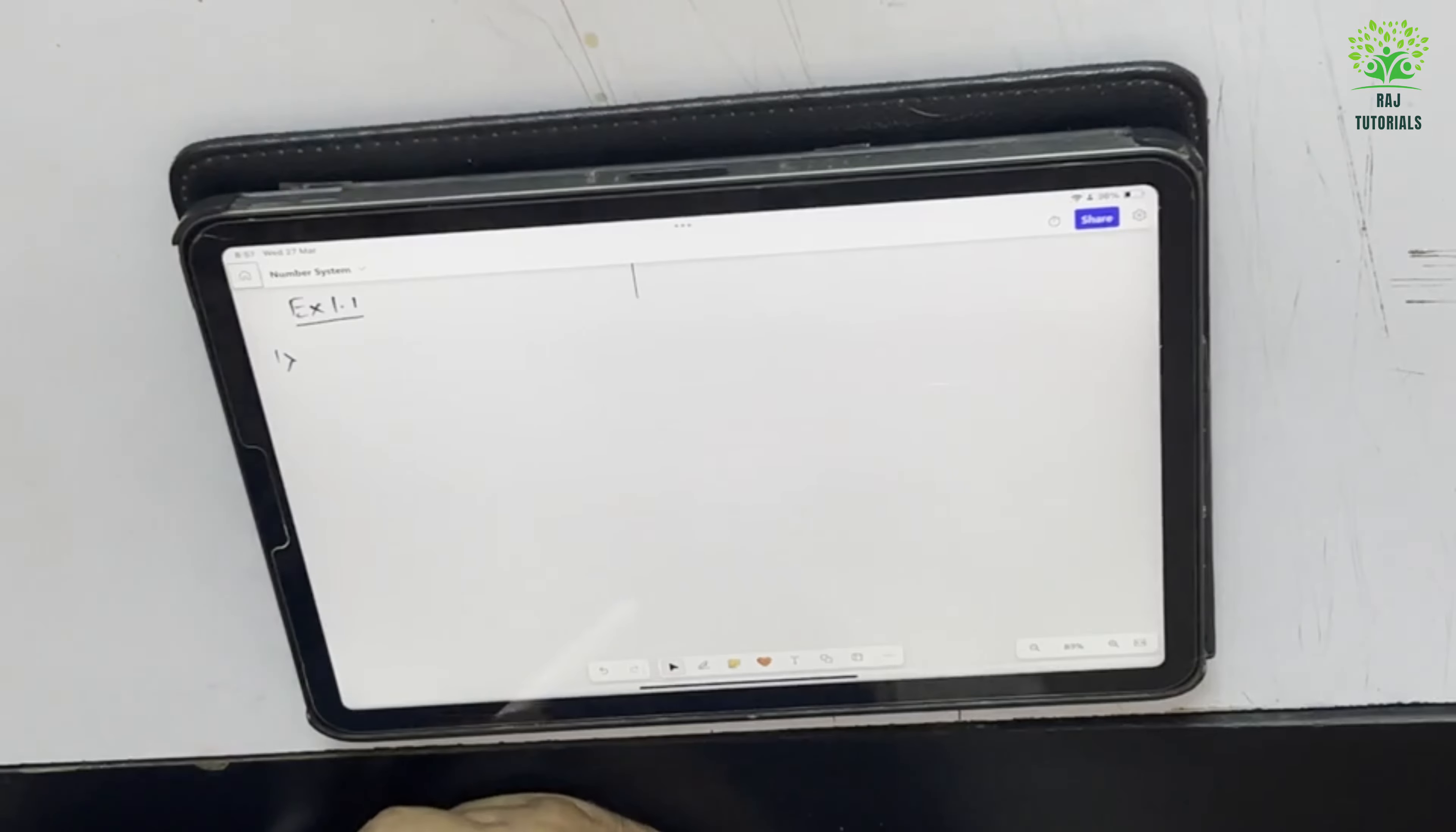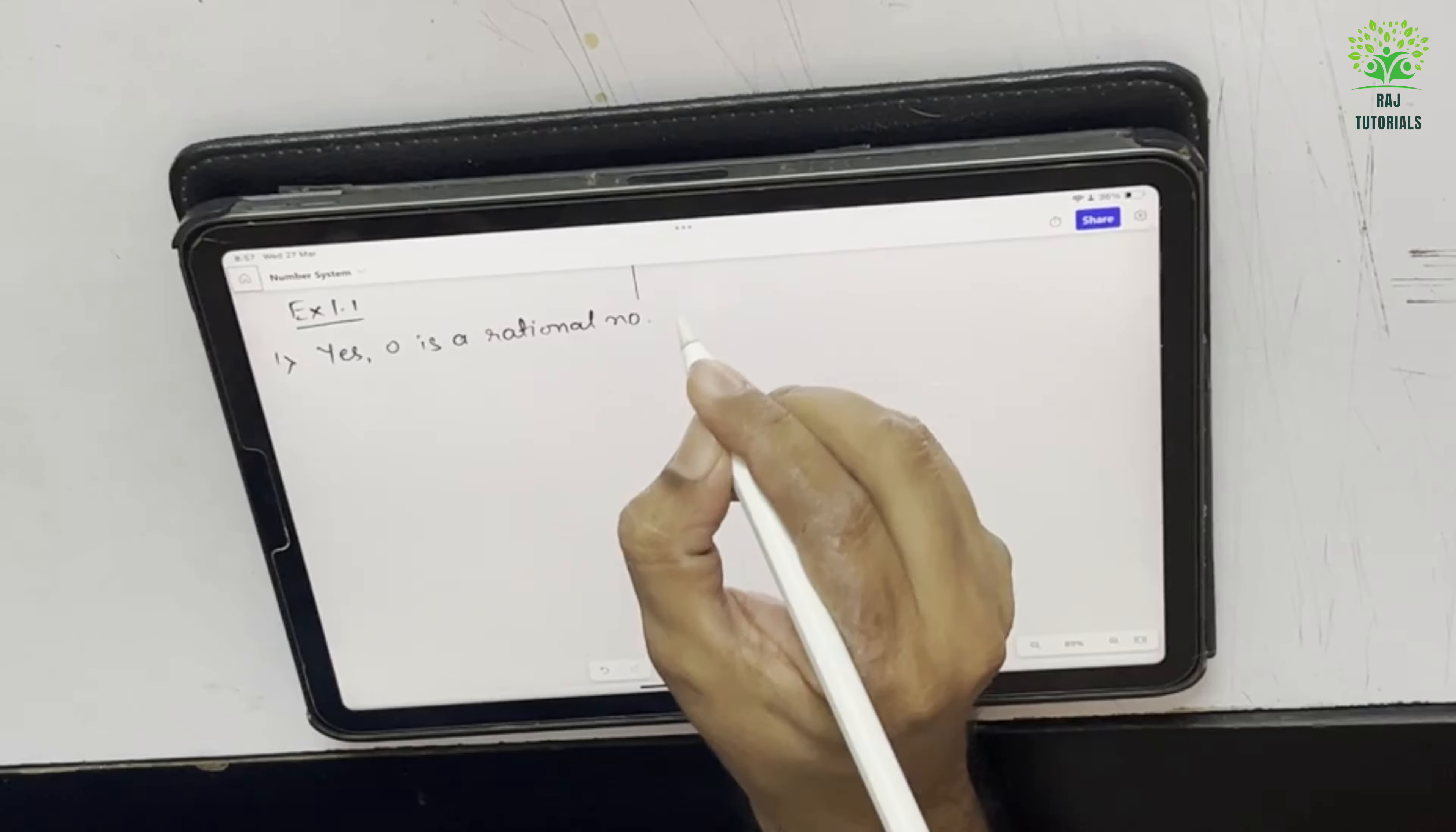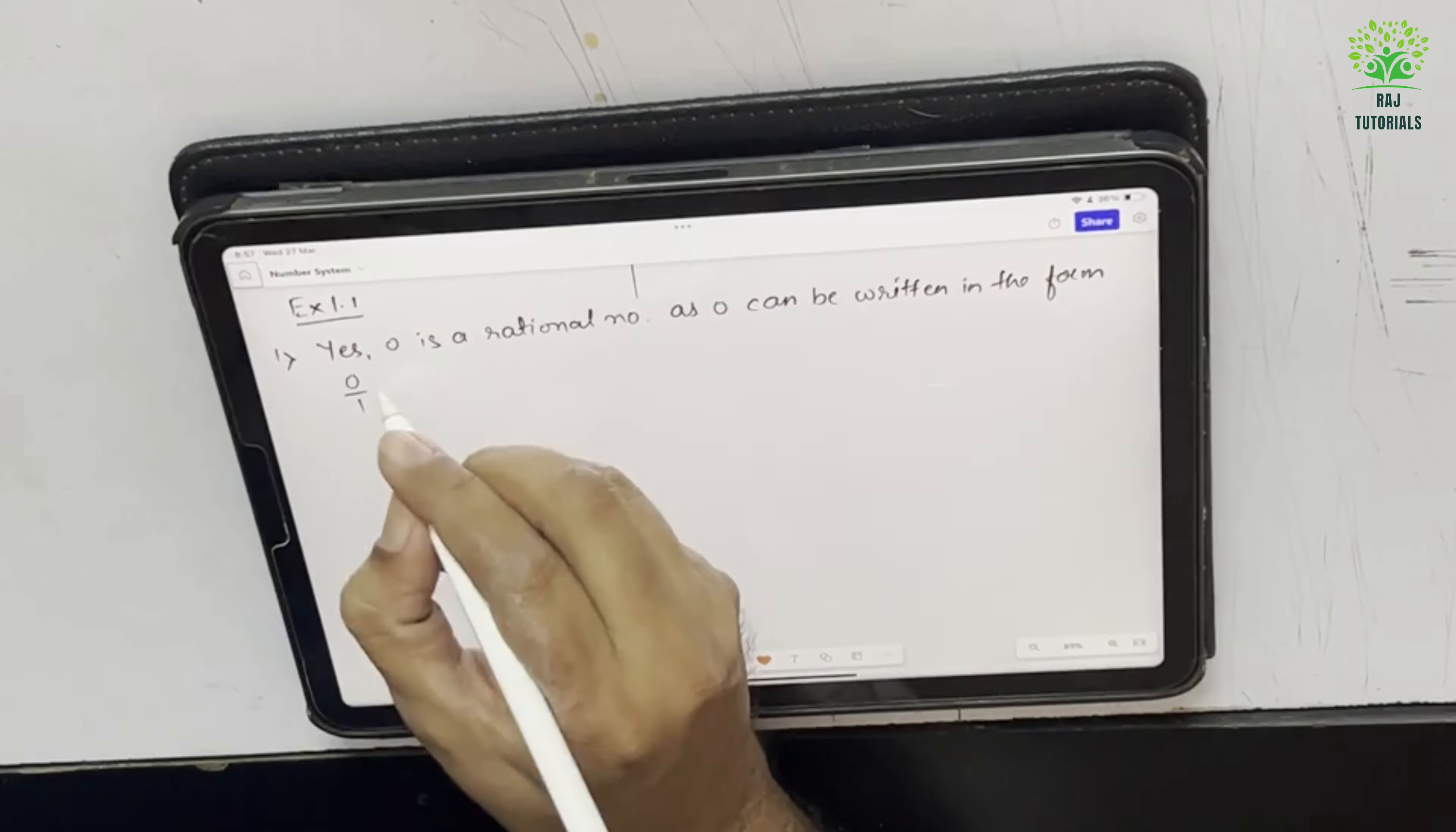Now let us discuss the first question of the exercise 1.1. It says is 0 a rational number? Can you write it in the form P by Q where P and Q are integers and Q is not equal to 0? So can I say yes, 0 is a rational number as 0 can be written in the form 0 by 1.